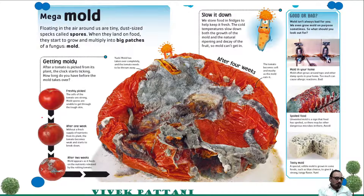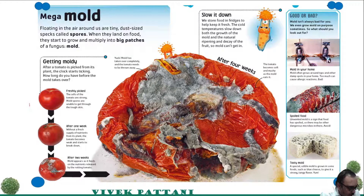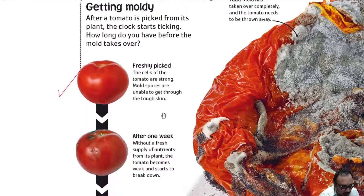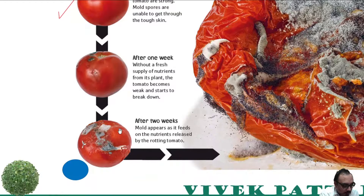If you want to test it, simply keep a fresh vegetable and leave it for a few days — the mold will start to grow within 10 to 15 days. Here is a freshly picked tomato. Without a fresh supply of nutrients from its plant, the tomato starts becoming weak and starts to break down. After two weeks, molds appear as they feed on the nutrients released by the rotting tomato.